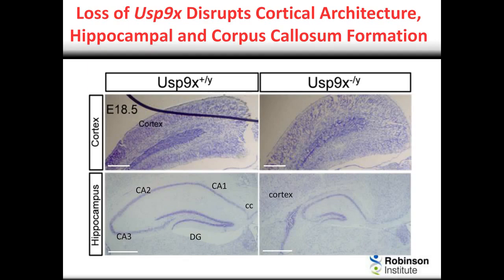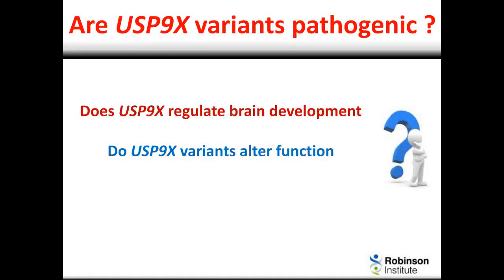We also saw evidence of altered neuronal migration within the hippocampus and altered axon growth — the corpus callosum visible in the control is essentially almost absent in the knockout mouse. We are also now investigating behavioural defects in these mice and can see some evidence of altered learning and memory. Collectively, we saw evidence of altered progenitor cell behaviour, altered neuronal migration and altered axon growth, which together with our embryonic stem cell evidence highlighted that USP9X is a gene that regulates normal brain development.